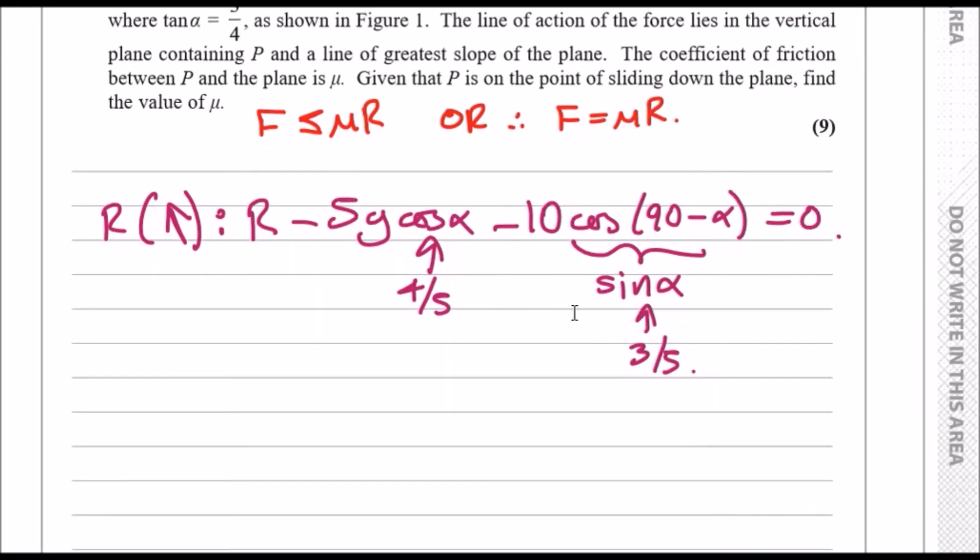Solving this completely, we can say now that R equals—throwing everything to the right side and simplifying—5g times 4/5 is just 4g, so it would be 4g plus 10 times 3/5. Cancel the 5s, you get 2, and you should get 6. So 4g plus 6—that's 4 times 9.8 plus 6—and you should get 45.2 newtons. So that's the value of the reaction.